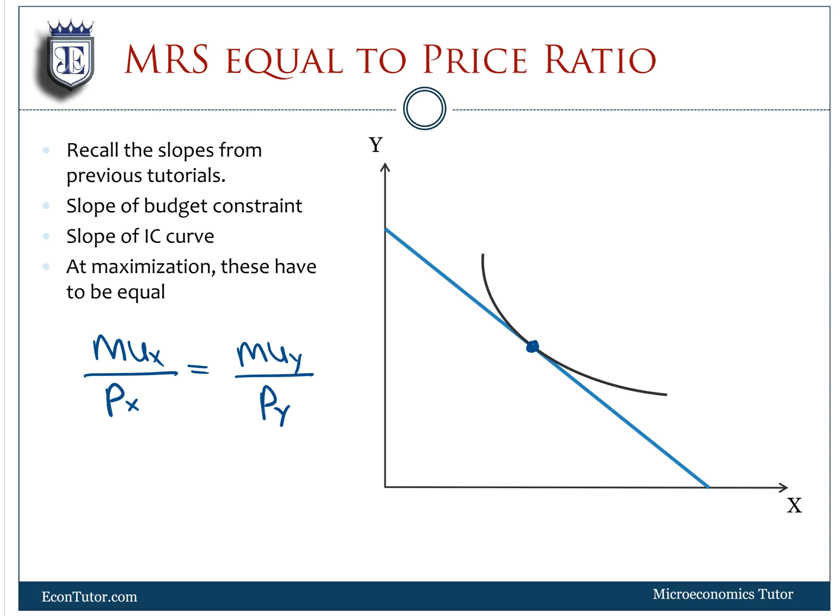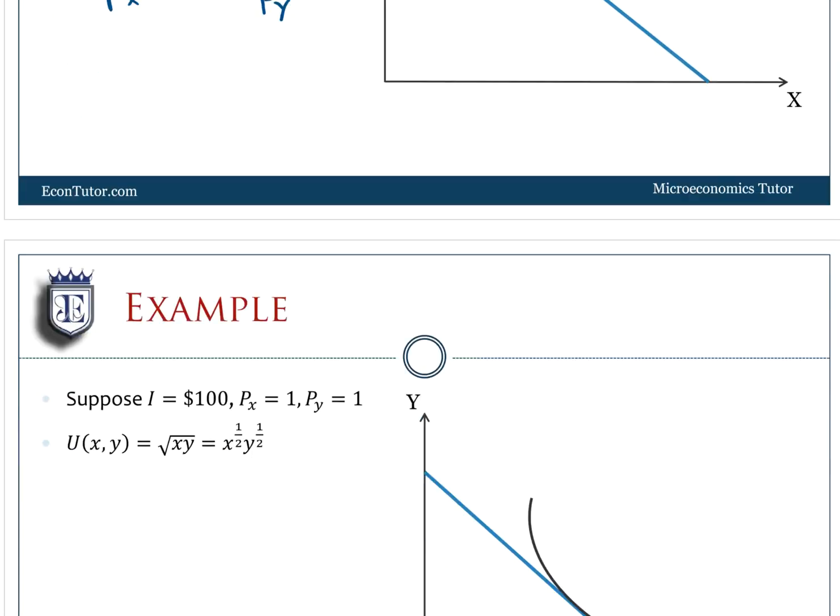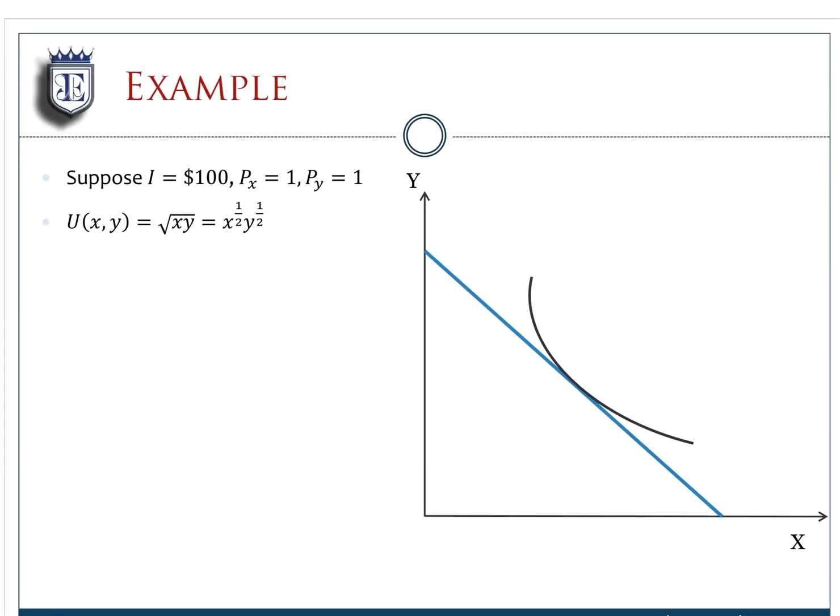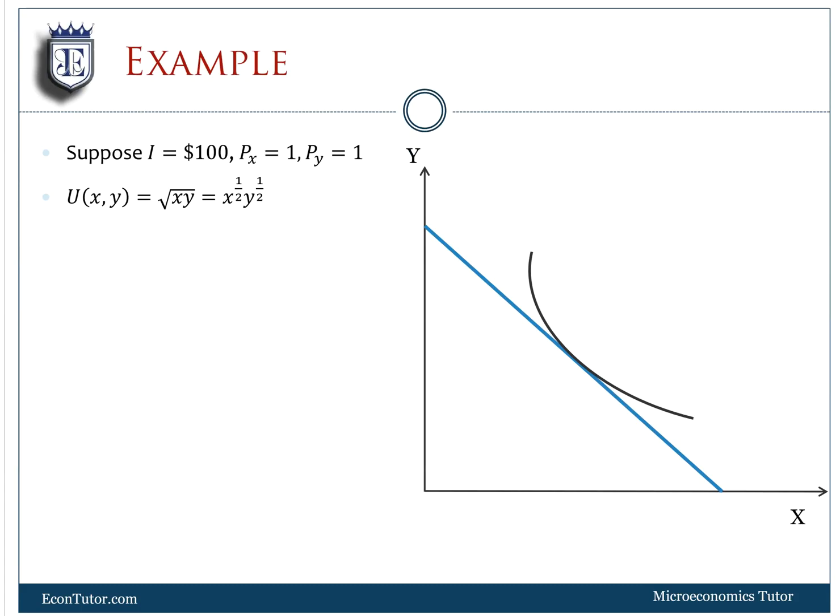Let's look at a math example and do some calculus. We know the price ratio is negative Px over Py. Using these prices, that's just negative one. But I don't have the MRS. MRS is equal to negative MUx over MUy.